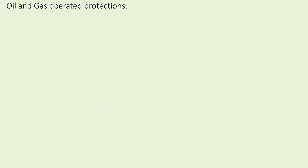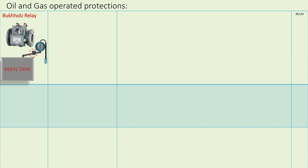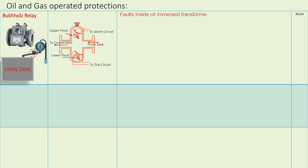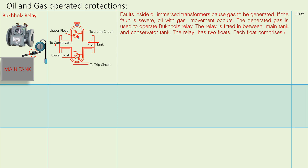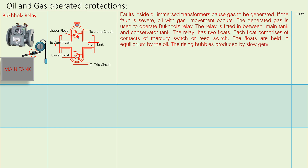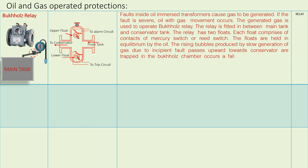Oil and gas operated protection — Buchholz Relay. Faults inside oil-immersed transformers cause gas to be generated; if the fault is severe, oil with gas movement occurs. The generated gas is used to operate the Buchholz Relay. The relay is fitted between the main tank and conservator tank by suitable pipes. The relay has two floats; each float comprises contacts of a mercury switch or reed switch. The floats are held in equilibrium by the oil. Rising bubbles produced by slow generation of gas due to an incipient fault pass upward towards the conservator or are trapped in the Buchholz chamber, causing a fall of oil level inside the chamber.